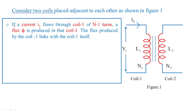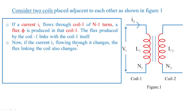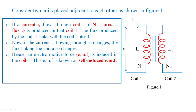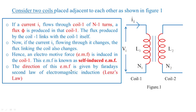We have to imagine a current I1 which is flowing through coil 1 of N1 turns. A flux phi is produced in that coil — that is coil 1. The flux produced by coil 1 links with coil 1 itself. Now if the current I1 flowing through coil 1 changes, then the flux linking the coil also changes. Hence an electromotive force — that is called EMF — is induced in coil 1, and that EMF is denoted as self-induced EMF. The direction of this induced EMF is given by Faraday's second law of electromagnetic induction, also known as Lenz's law.